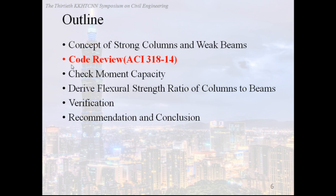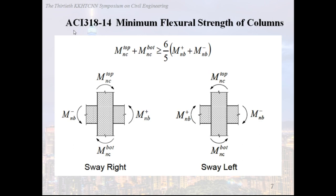Secondly, we will review this code: ACI 318-14, minimum flexural strength of columns. The flexural strength of columns shall satisfy this inequality. That is, the sum of the nominal flexural strength of columns should be larger than or equal to 6 over 5 times the sum of the nominal flexural strength of beams. And we illustrate this equation as figure below. The first one is the frame sway to the right, and the second one is the frame sway to the left. And due to the positive and negative moment are usually not the same, so we need to consider both of it.